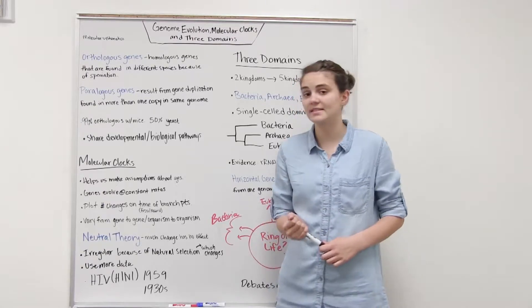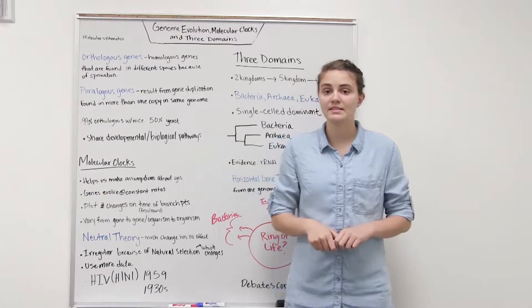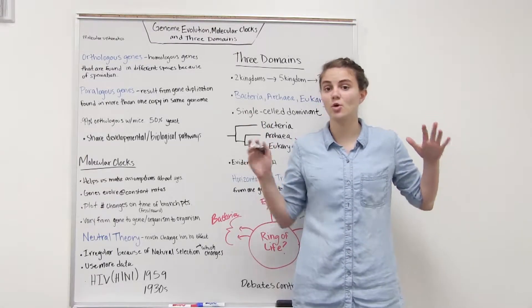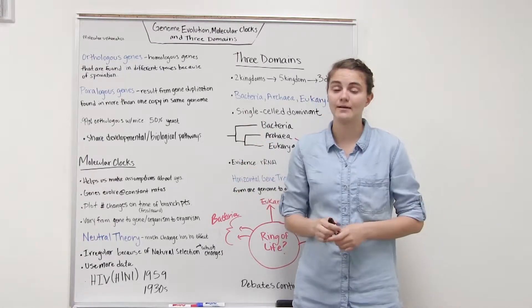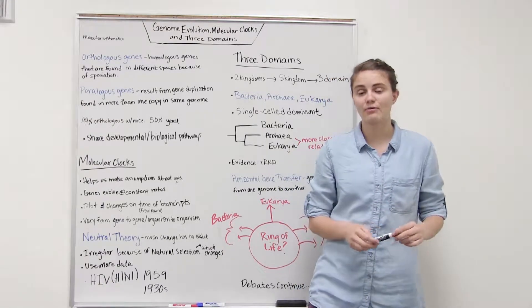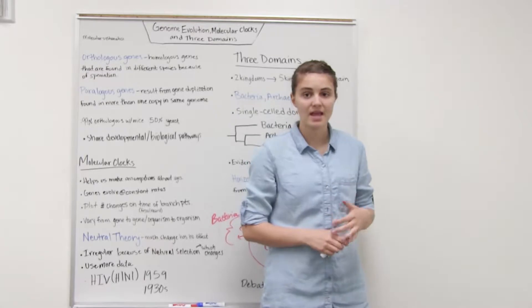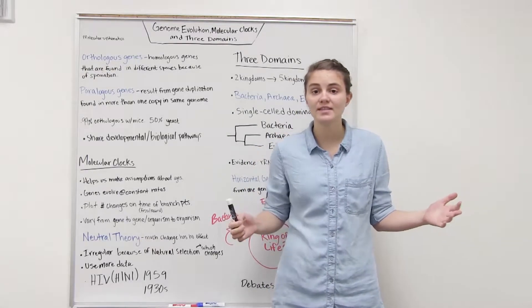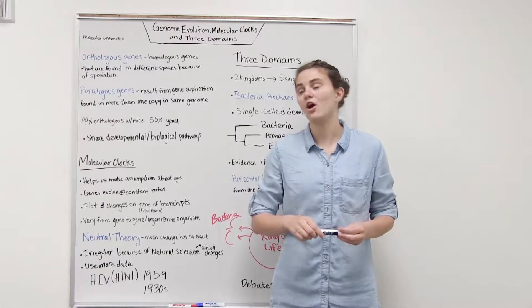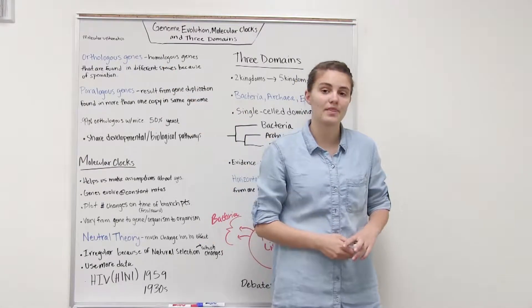Molecular systematics is useful for a number of reasons. First, sometimes we want to compare things pretty generally and they don't have really any morphological similarities. For example, if we're trying to figure out the evolutionary similarities between yeast and humans, we don't share a lot of morphological characteristics with them. However, there are a lot of genetic things that we share with them.